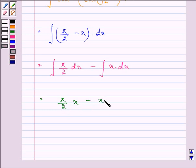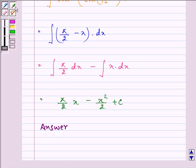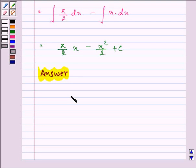So the answer is pi x by 2 minus x squared by 2 plus c.